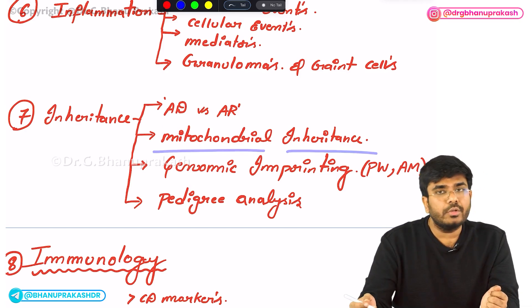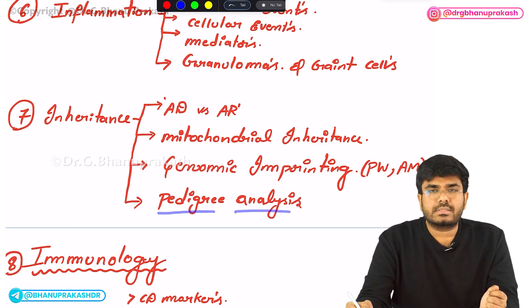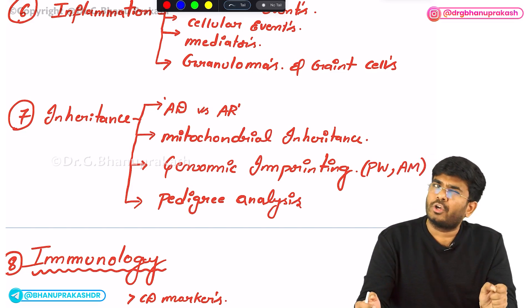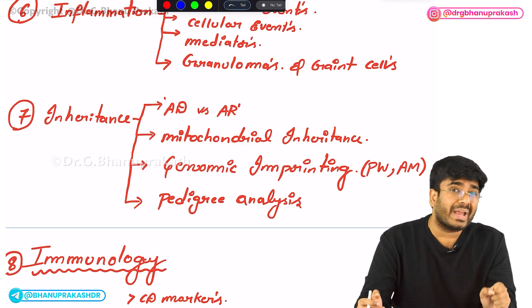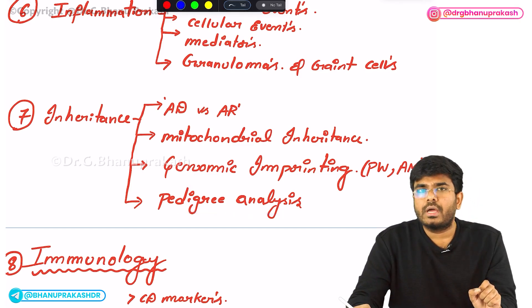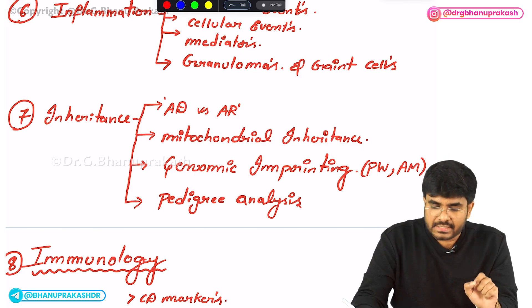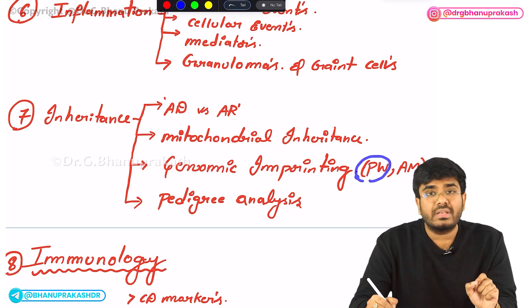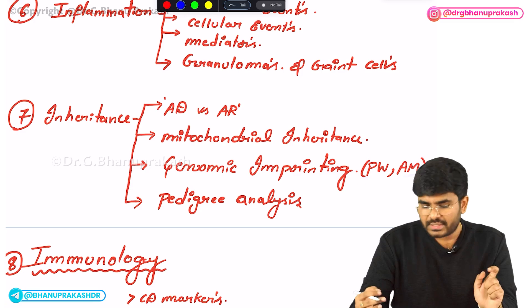Mitochondrial inheritance is purely maternal. You also have to know about pedigree analysis — they will give you a pedigree chart and ask you to identify whether it's autosomal dominant, autosomal recessive, X-linked dominant, X-linked recessive, or mitochondrial inheritance. Pedigree analysis is very important. After that, the concept of genomic imprinting — what exactly is genomic imprinting, and the diseases in which you will see this, like Prader-Willi syndrome and Angelman syndrome. These are important for the exam.